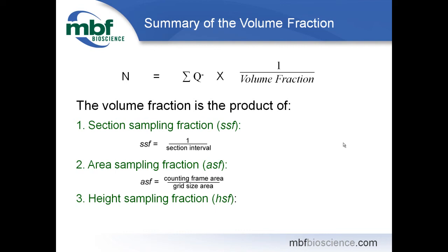The volume fraction has those three components: how many physical sections are you skipping — take the reciprocal; what is the ratio of the counting frame area to the space between counting frames — take the reciprocal to extrapolate in the X-Y plane; and the height of the dissector divided by the average section thickness. So we're going to have to be measuring the thickness of the tissue. One question is how often to measure tissue thickness — if your tissue thickness doesn't vary at all, you only need to measure it once. But the more it varies, the more measurements you should make.